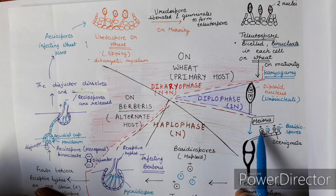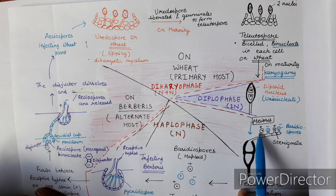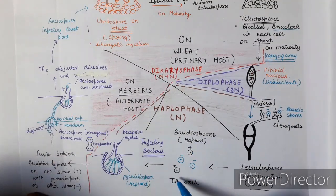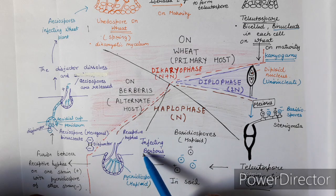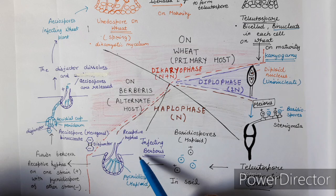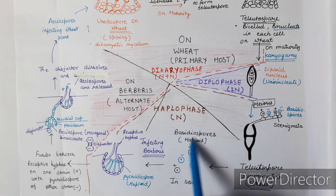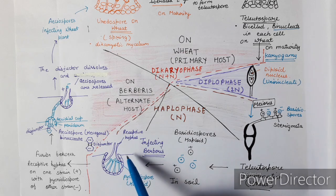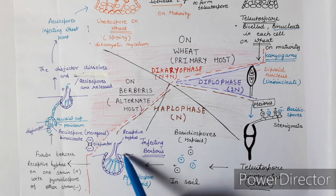Basidiospores can be of different strains — some positive, some negative. They are released and present in the soil, being haploid in nature. These basidiospores infect the alternate host, Berberis vulgaris, where symptoms appear. On the upper surface of the leaves, a pycnidial cup forms. Both positive and negative strain spores infect the leaves, forming the cup-like pycnidial cup on the upper surface.